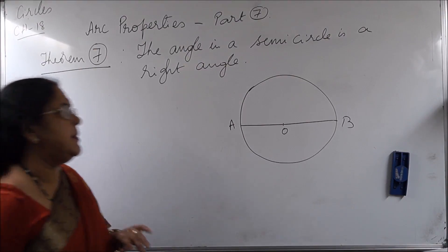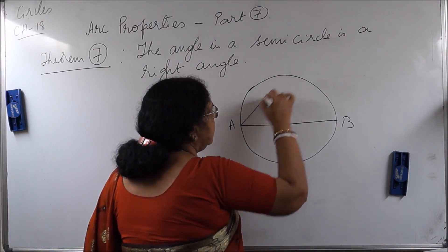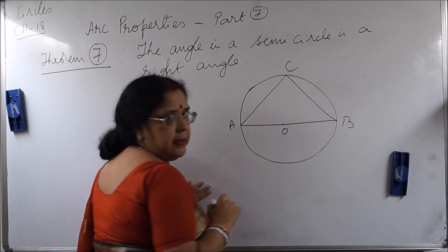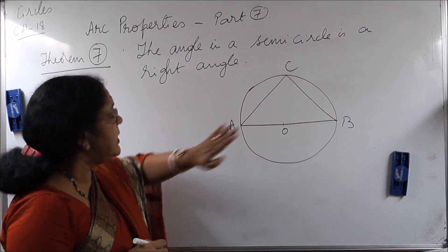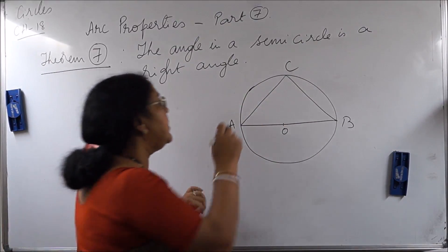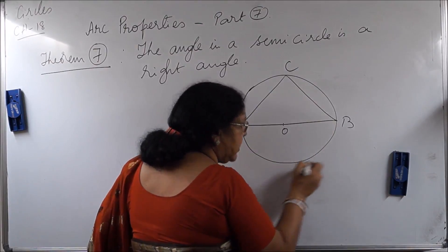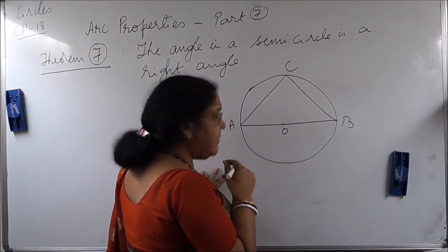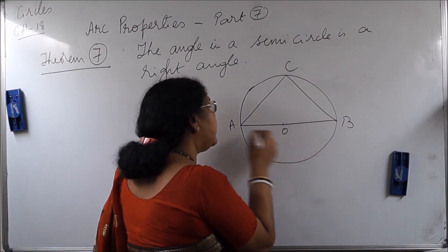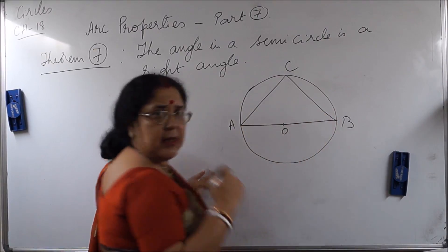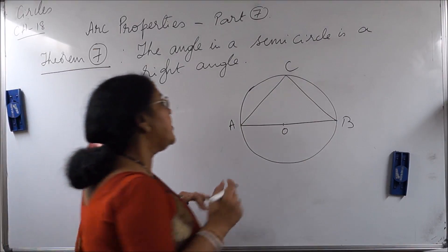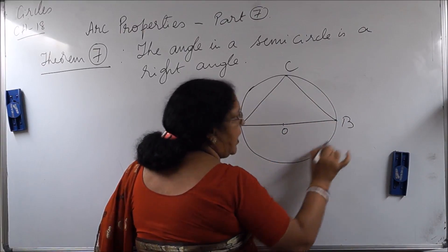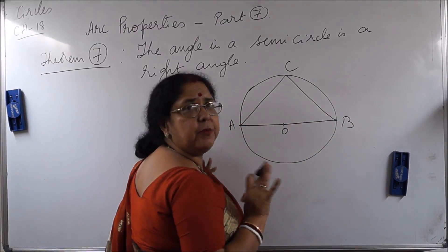So now the angle in a semicircle — let us draw an angle ACB. Angle ACB is an angle in a semicircle, and this angle ACB is subtended by the arc AB in the remaining part of the circle. Coincidentally, the arc is a semicircle — half of the circumference of the circle. So angle ACB is the angle subtended by the arc AB, which in this case happens to be a semicircle.